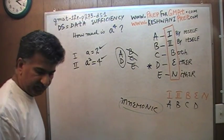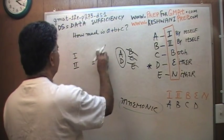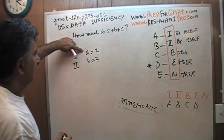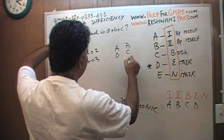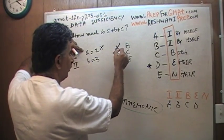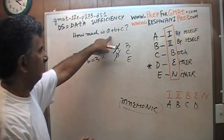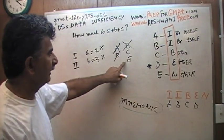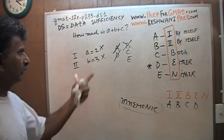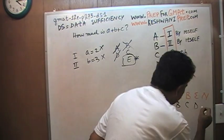Let's make up an example where the answer turns out to be E. Here's the question: how much is A plus B plus C? I'm telling you that A equals 2 and B equals 3. Immediately write down A, D, B, C, E. Is the first statement by itself enough? Obviously not — it does not work. Rule out A and D. Is the second statement by itself enough? No. Cross out B. The answer has to be either C or E. If A equals 2 and B equals 3, can you tell me how much is A plus B plus C? No — I need to know what C is. The answer in this case is neither. The answer is E — E stands for neither.